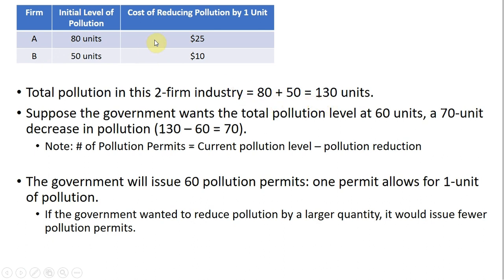Firm A can reduce pollution at a cost of $25 per unit, Firm B at a cost of $10 per unit. Suppose the government wants the pollution level at 60 units. This would be a 70-unit decrease from 130.